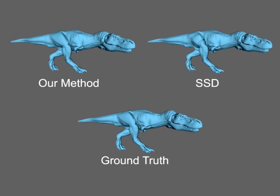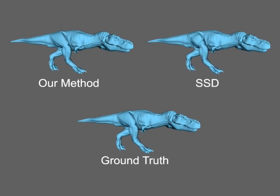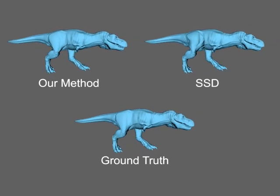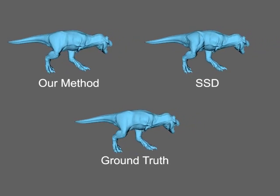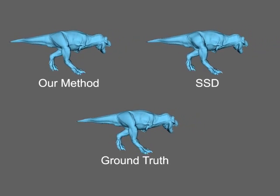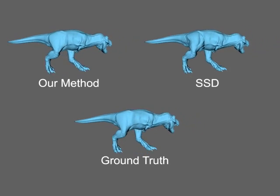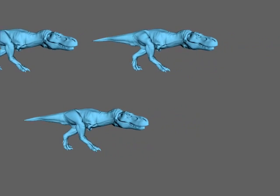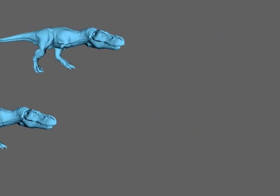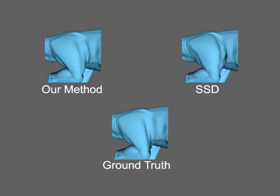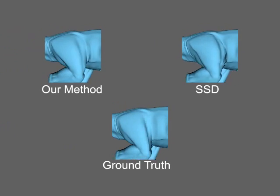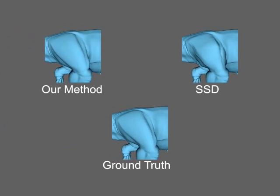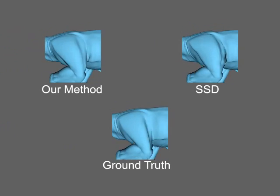We propose a technique that can learn from a set of exported example poses and generate a fast and accurate model for high speed evaluation. Our model is also much more expressive than linear blend skinning, currently the most common enveloping model for real-time applications.